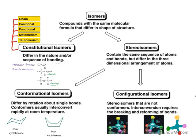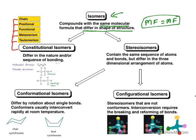Now let us understand what isomers are. Isomers are compounds with the same molecular formula but they differ in the shape of the structure. Two molecules have the same molecular formula but they are not similar molecules — there is a difference in them. They are called isomers.